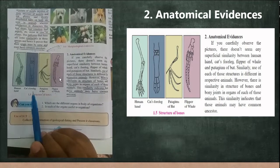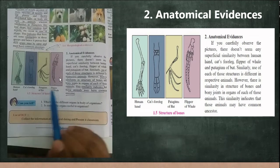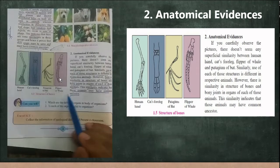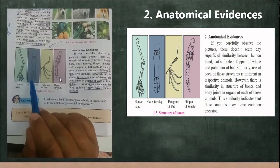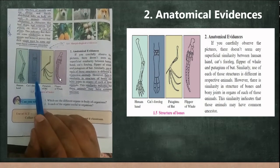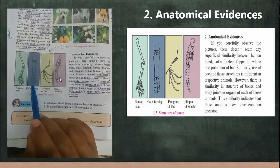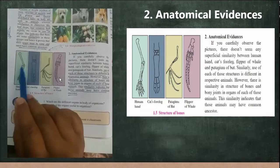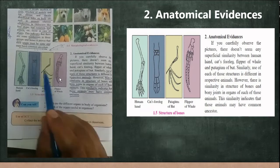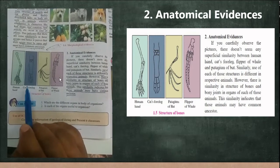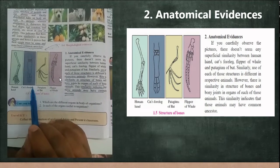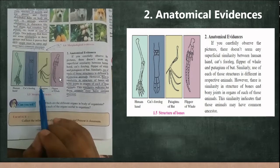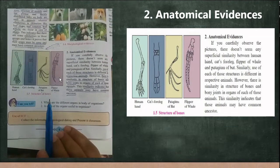Though the functions of the human hand, cat's foreleg, bat's patagium, and whale's flipper are different in different organisms, if you see the structure and arrangement of the bones and joints, there is a similarity. This similarity in bone arrangement indicates that these animals evolved from a common ancestor, proving they all share a common origin.